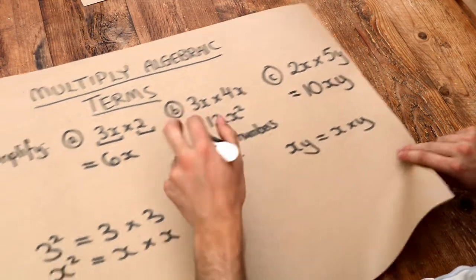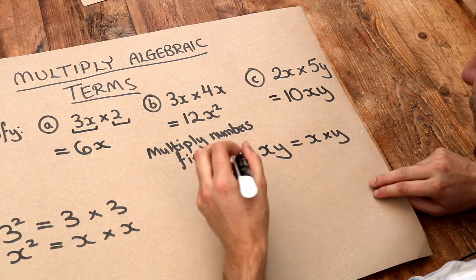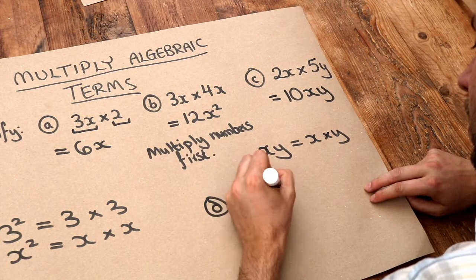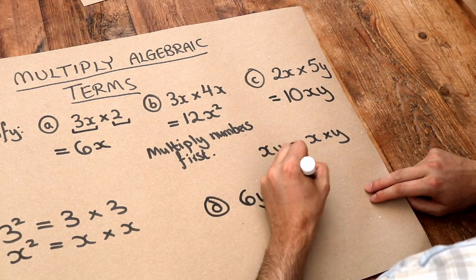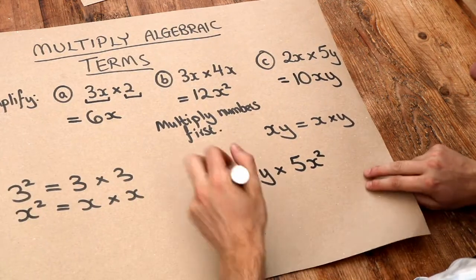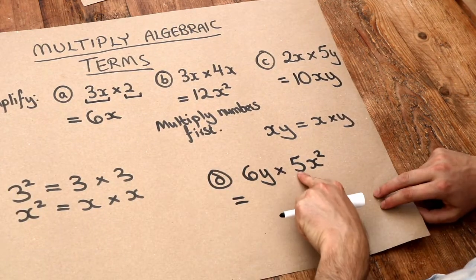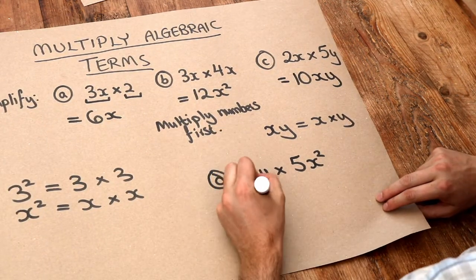And just to note about this alphabetical order, if I had, say, 6y times 5x squared, then again, we do the 6 times the 5 first, multiply numbers first is 30.